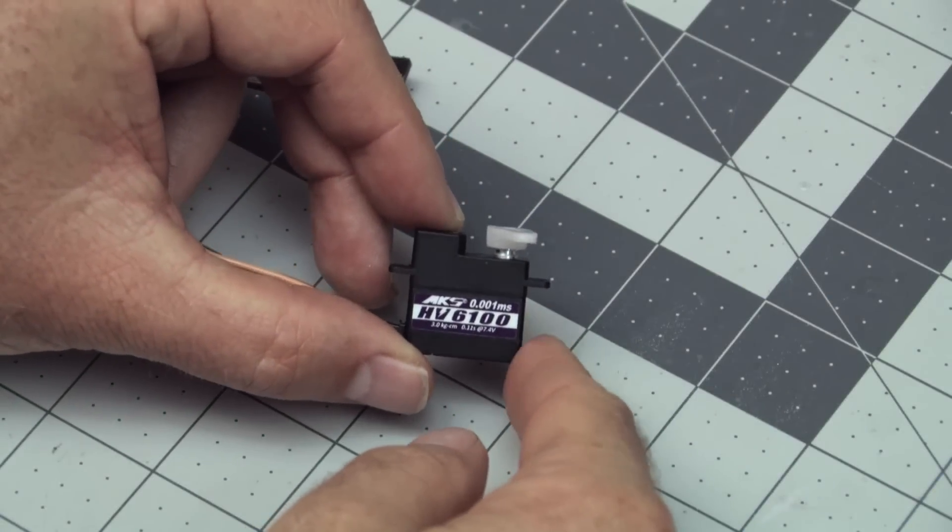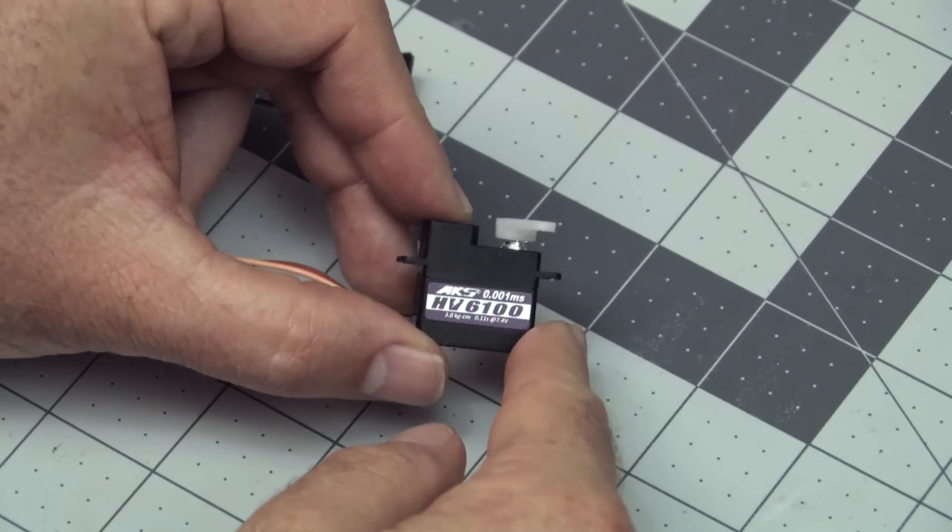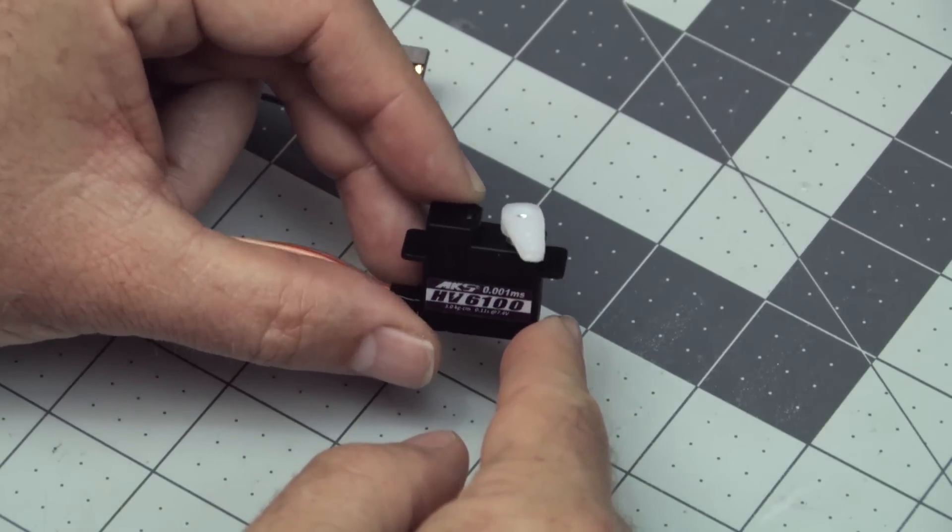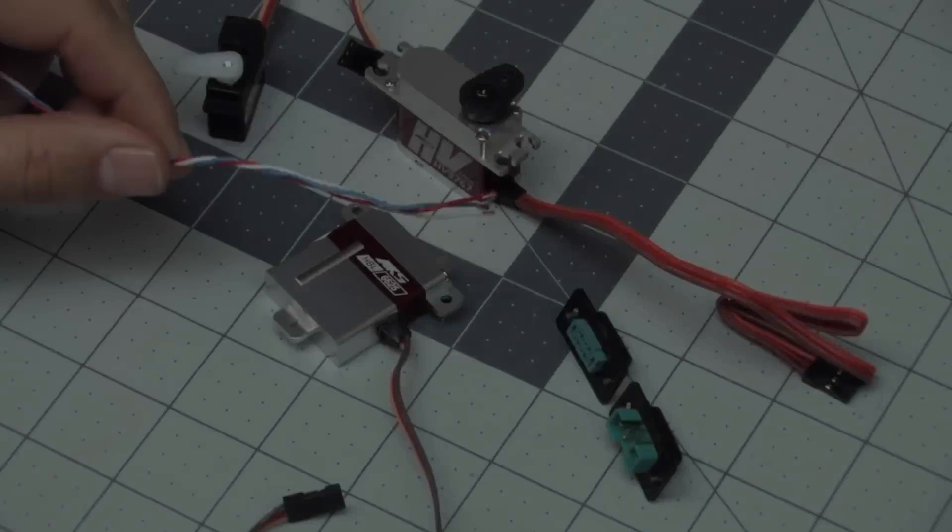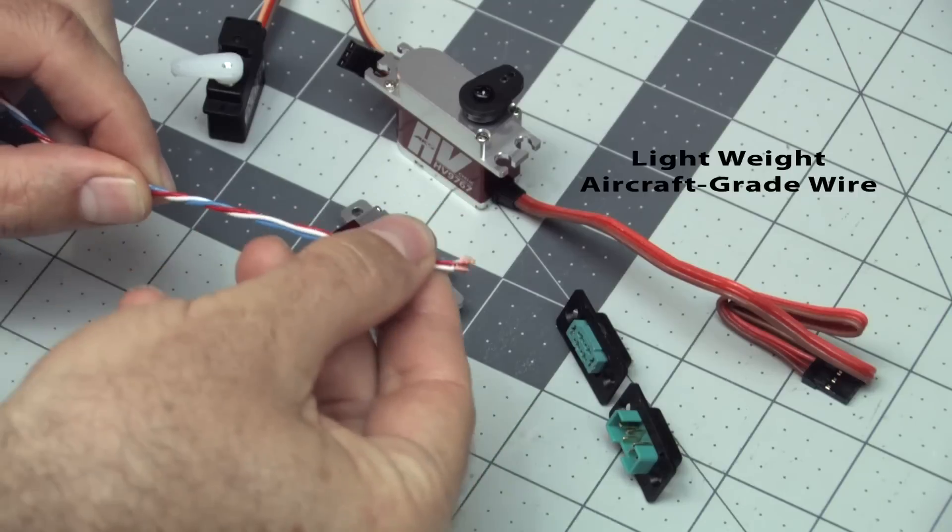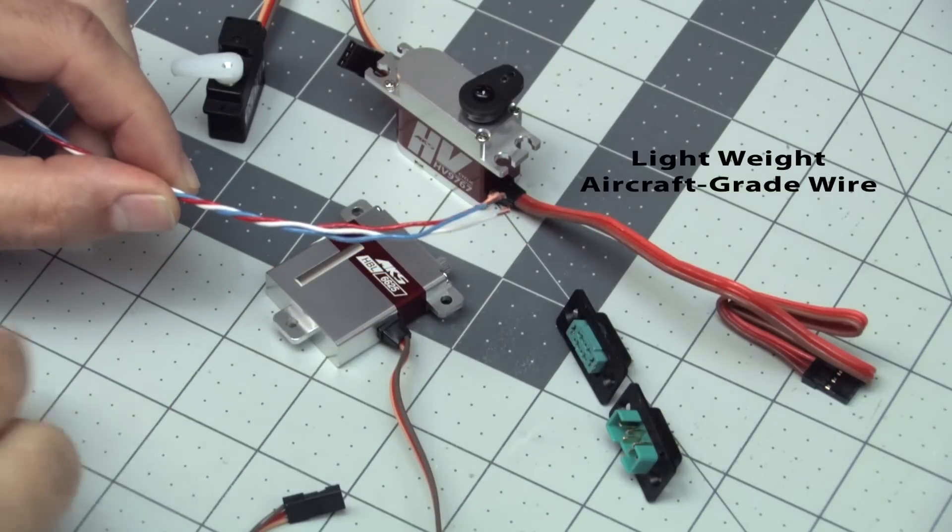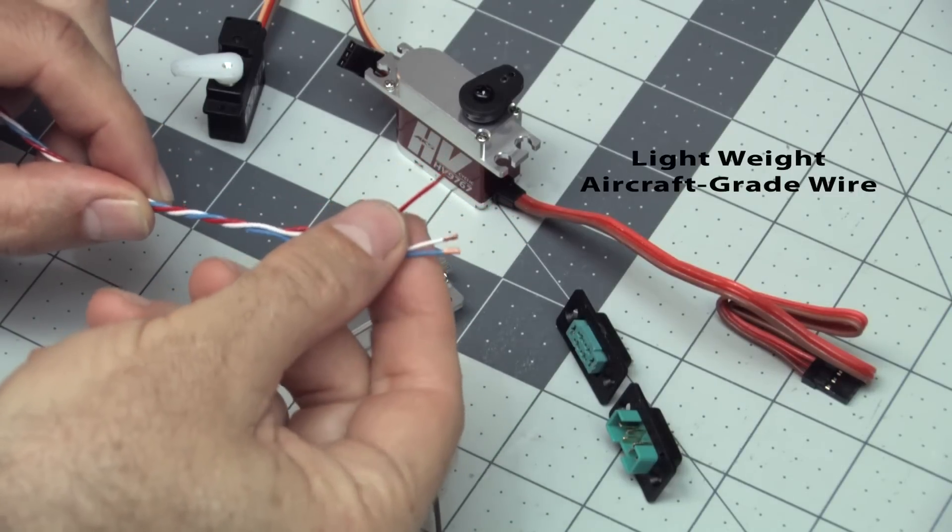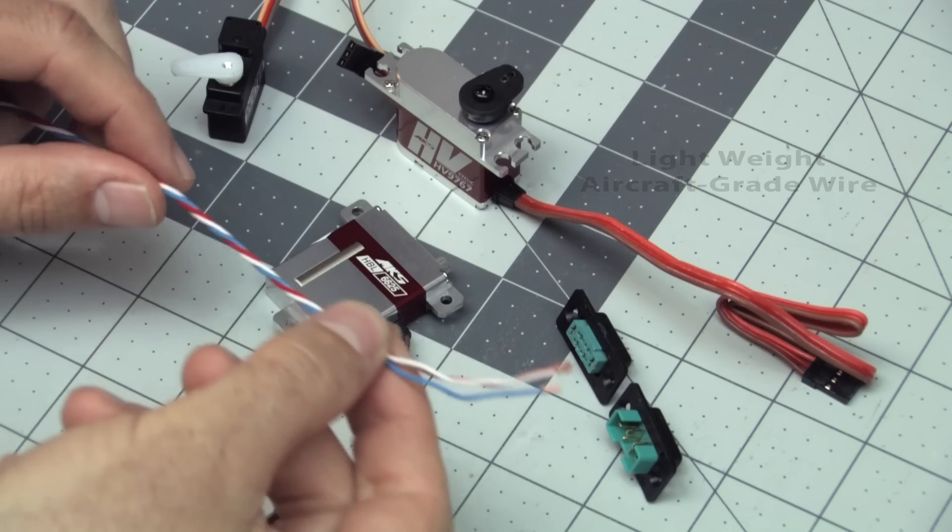And for rudder, we're going to use the HV 6100 again. Saves weight. It's got plenty of torque at 8.4 volts and it'll save a little bit of room up front in the fuse. And we're going to build our own harness. I found some really nice three-strand lightweight wire here. It's a lot lighter than regular servo wire. It's got a very high wire count in here and it should save us some weight off our harness.